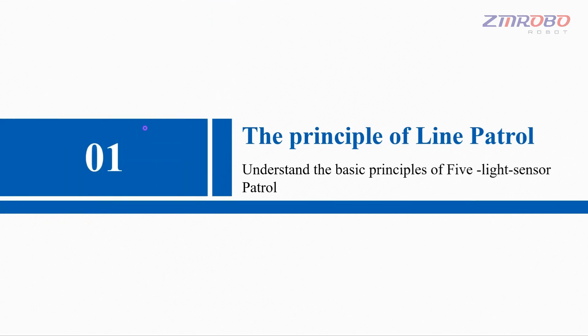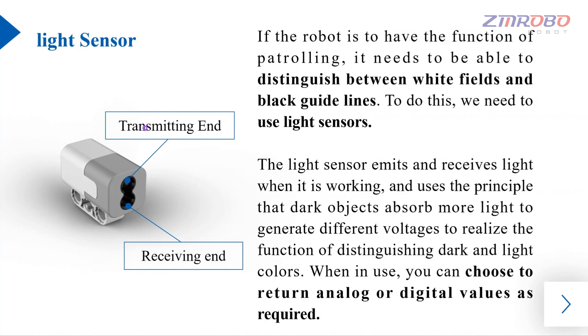Then, we need to learn about the principle of Line Patrol with 5 light sensors. In order for the robot to have the above functions, it is necessary to use light sensors first, so that the robot can distinguish between the white field and the black guideline.